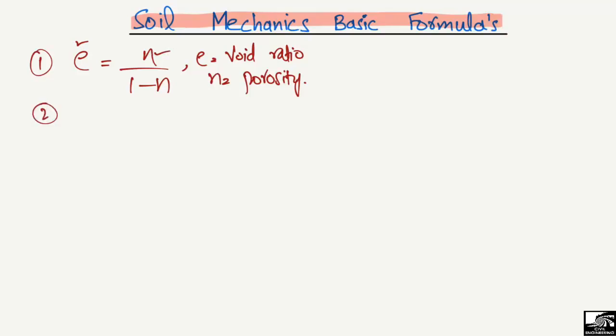The second relation is n = e/(1+e). In this case, if the void ratio is known to you and you have to find out the porosity, you use this formula. So these two are the basic formulas relating void ratio and porosity.